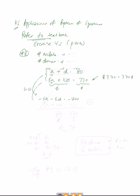The second equation stays as 5n plus 10d equals 770. Now I add the two resulting equations, and n cancels because the coefficients are opposites. Adding the d's: negative 5 plus 10 gives positive 5d. And negative 400 plus 770 gives 370. Dividing both sides by 5, d equals 370 divided by 5, which is 74.